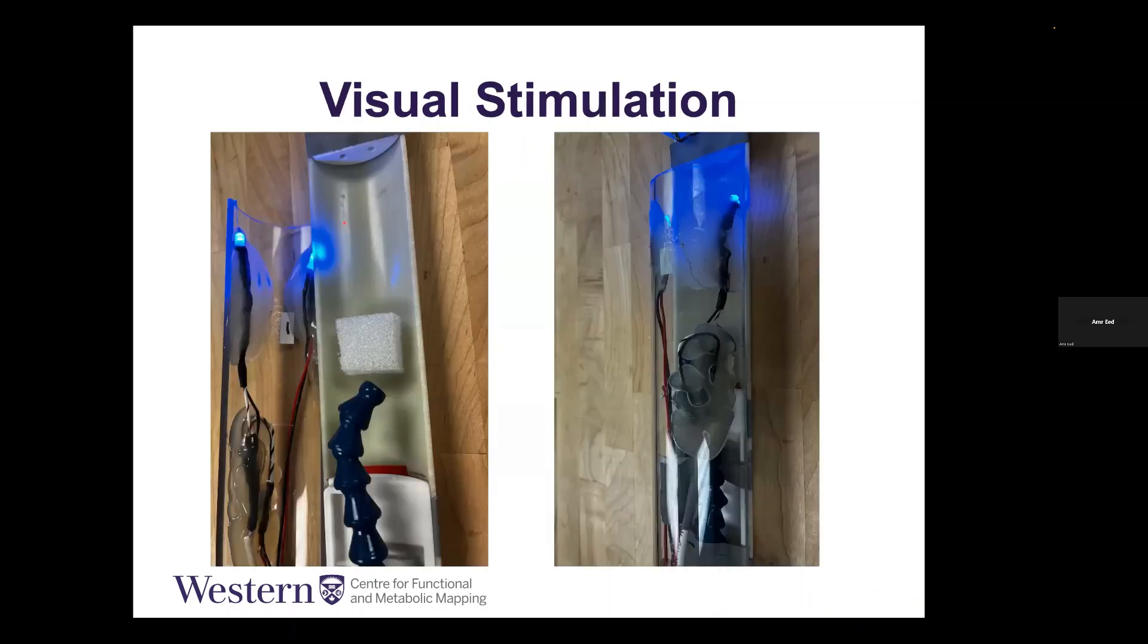This is how the visual tray or the visual LEDs look like in real life. We have a tray with two LEDs on both sides, and they are fitted here. The animal would be on the far end here.